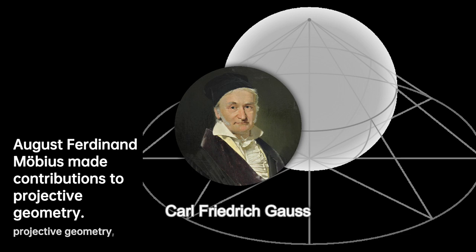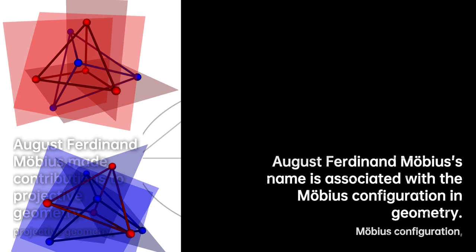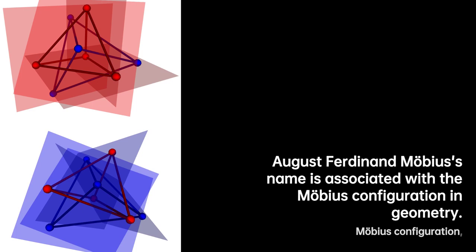Möbius then went on to study with Johann Pfaff at the University of Halle, where he completed his groundbreaking doctoral thesis on the occultation of fixed stars in 1815.